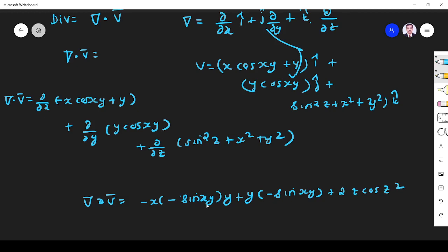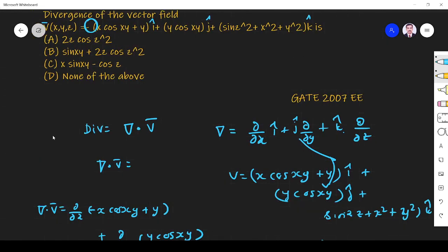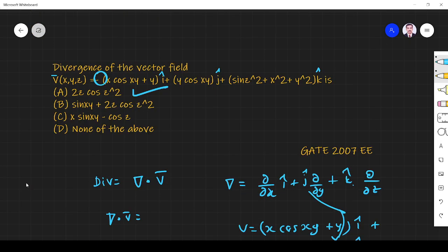You see it is minus x sin xy, when you differentiate x will come, so this will be cancelled. Option a is 2z cos z squared. Where is 2z cos z squared? Option a. Option a is the right answer. Thank you.